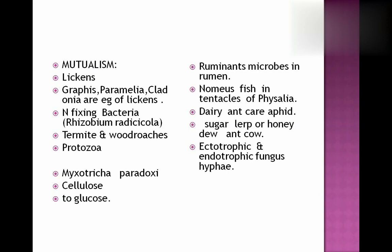Likewise, termites and wood roaches: termites eat cellulose which is not digested by the alimentary canal of the termite, but protozoan Mixotricha paradoxa is present in their alimentary canal which converts cellulose into glucose. Similarly, ruminant microbes are present in ruminants which convert cellulose into glucose.